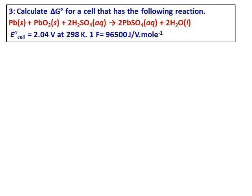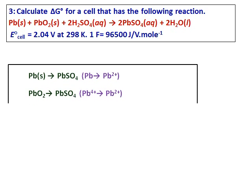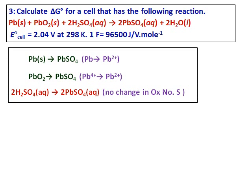Calculate delta G° for a cell that has the following reaction. And you see that lead solid is reacting with lead oxide solid in the presence of sulfuric acid and the E° cell is given and the value of Faraday is given. So before we start, we should know the half reactions and we should know what is getting oxidized and what is getting reduced. So looking at the oxidation states, we realize that Pb solid is getting converted to PbSO₄ and the oxidation state of lead changes from 0 to 2+.